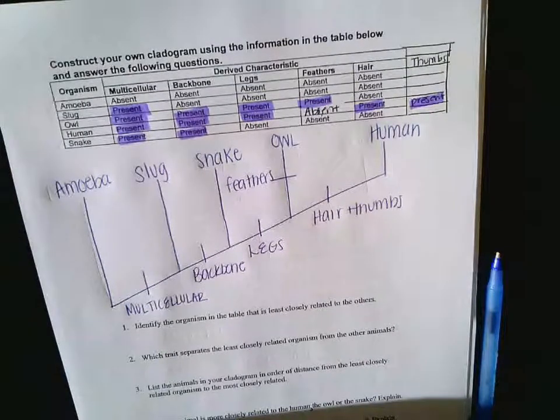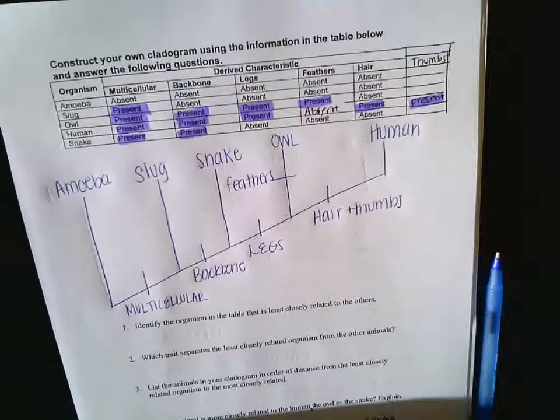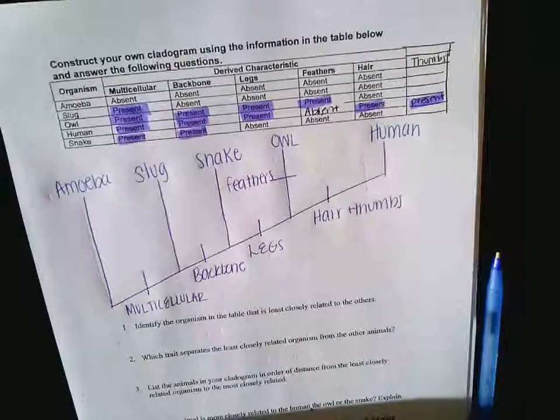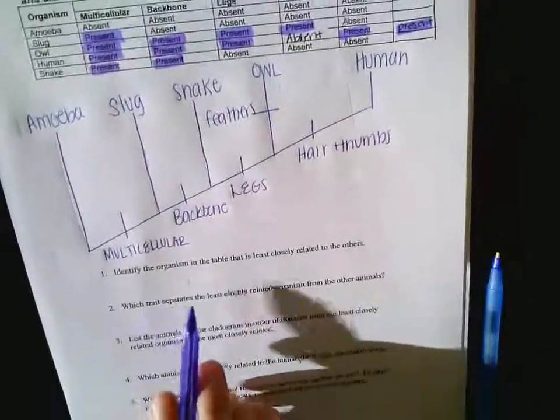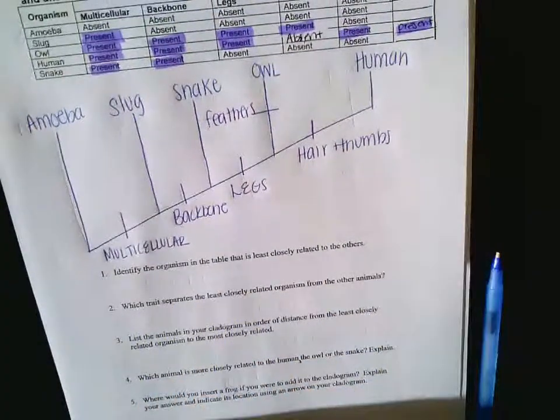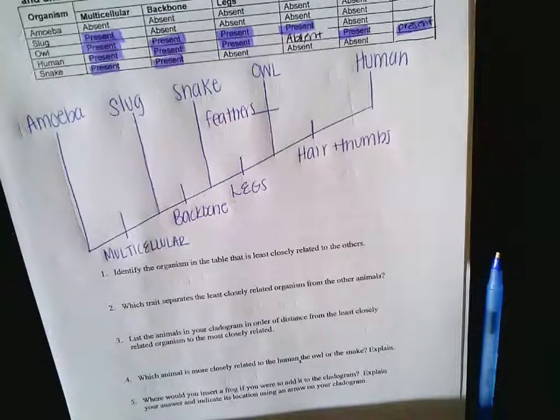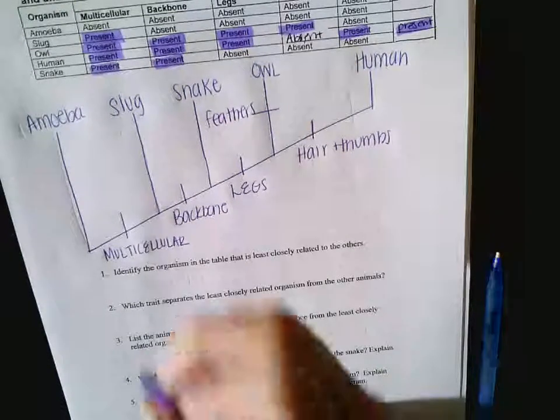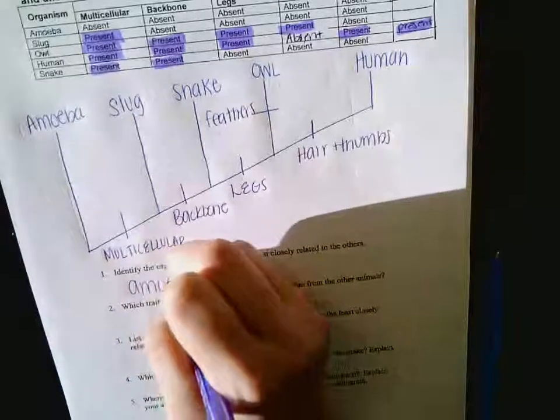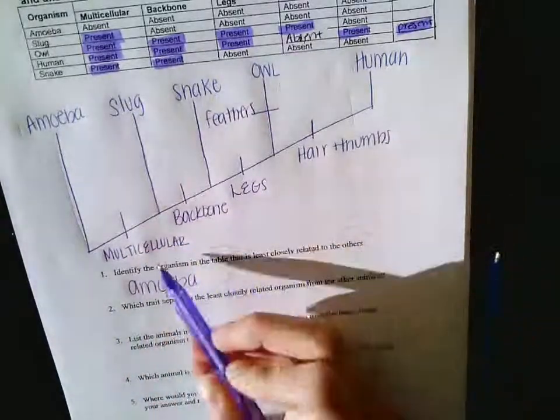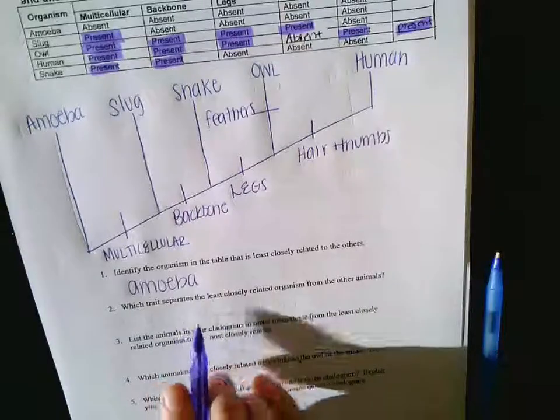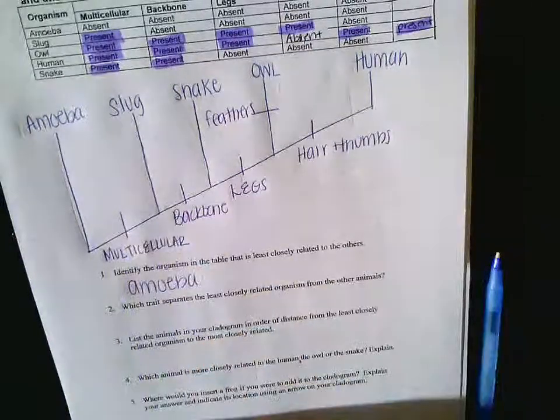So identify the organism in the table that is least closely related to the others. Who is the most distantly related? The amoeba. Why? Yeah, it doesn't have any of these. Which trait is it that separates the amoeba from the slug?